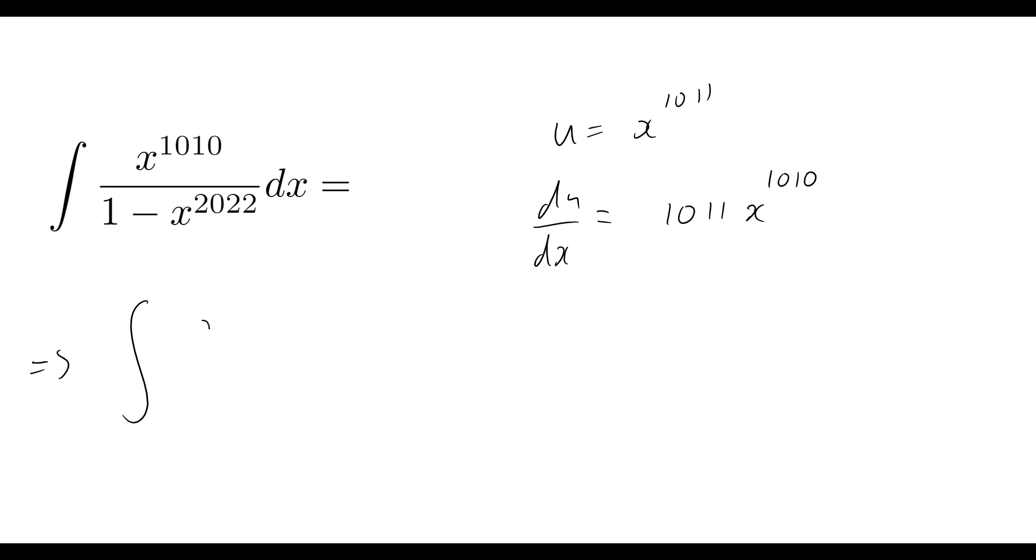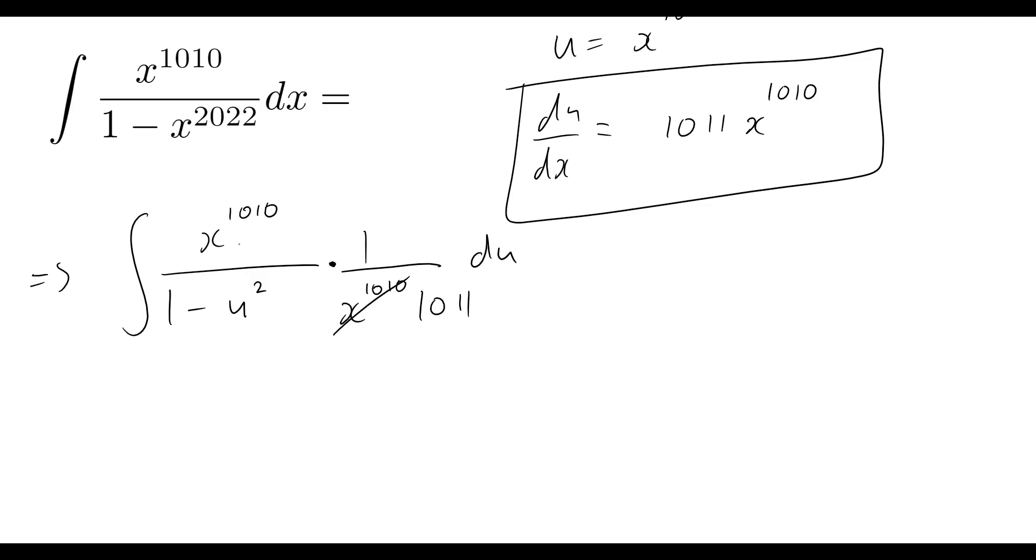Now we have the integral of x to the 1010 divided by 1 minus u squared. And then dx, we can rewrite that just from rearranging this expression. We can now rewrite this as multiplying by 1 over x to the 1010 times 1011, and then we've got that du there.